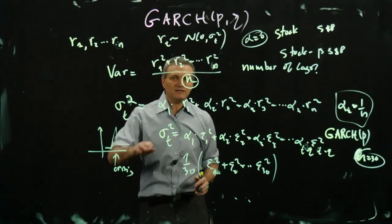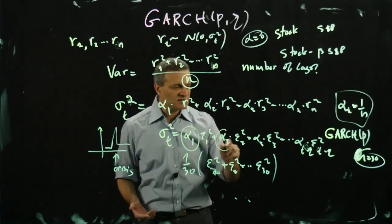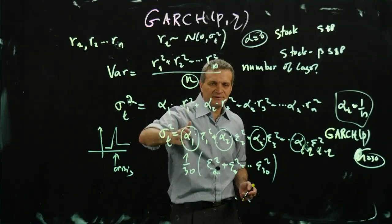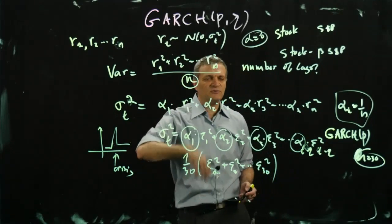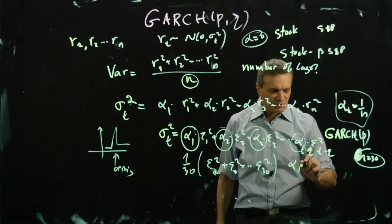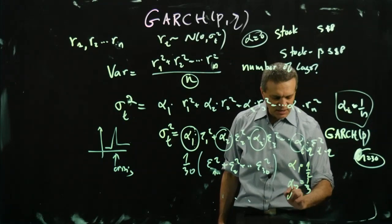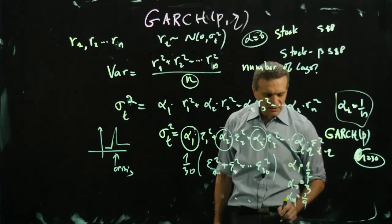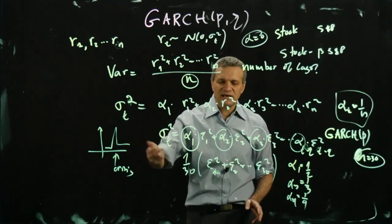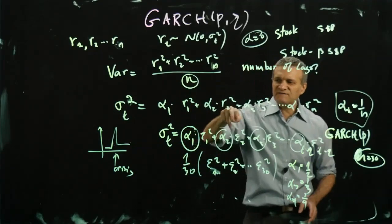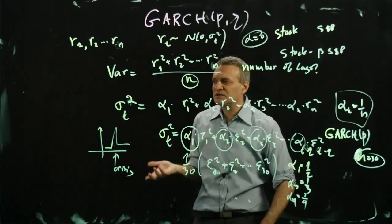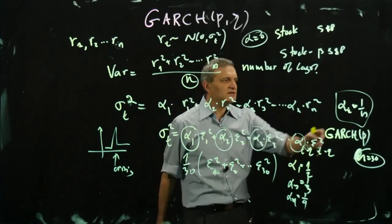More general GARCH models are obtained by playing with the weights. For example, α₁ = 1/2, α₂ = 1/3, α₃ = 1/4, and so on — so recent returns get higher weight. You're estimating today's volatility as a weighted average where yesterday's return gets half the weight, the day before gets a third, etc. That's a legitimate GARCH model with different weights than the uniform 1/n.